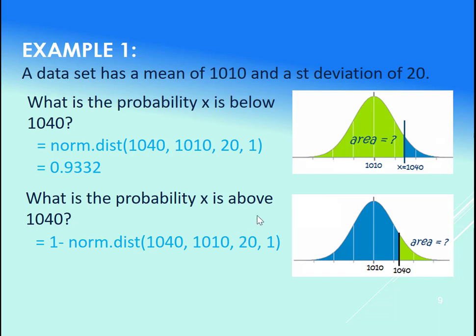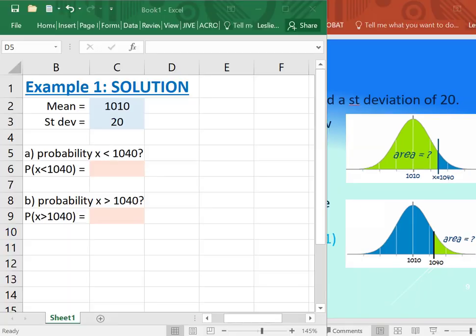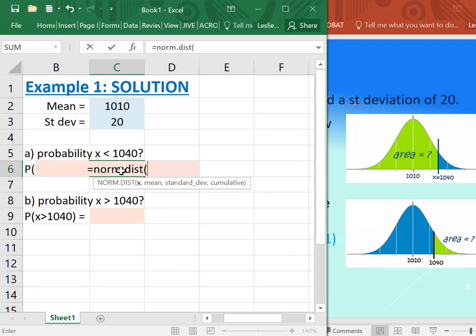Okay, so let's go try this out in Excel. Okay, so here we are. So I've just entered the mean of 1010 and standard deviation of 20. Probability that x is less than 1040—we just use the equals norm.dist, put in 1040.